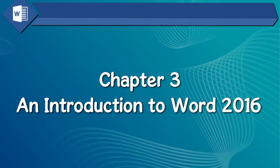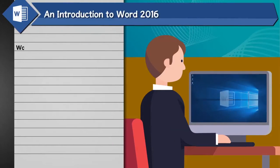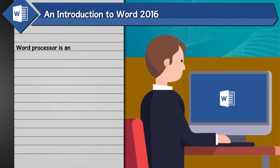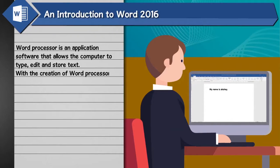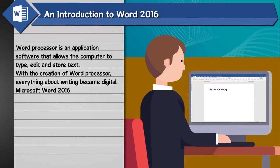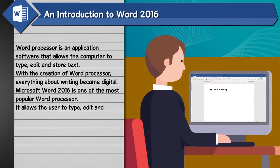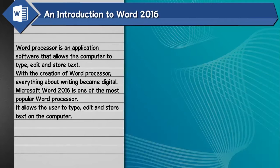Chapter 3: Introduction to Word 2016. A Word Processor is an application software that allows the computer to type, edit, and store text. With the creation of Word Processor, everything about writing became digital. Microsoft Word 2016 is one of the most popular word processors. It allows the user to type, edit, and store text on the computer.